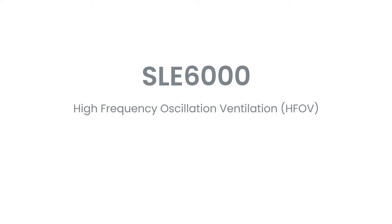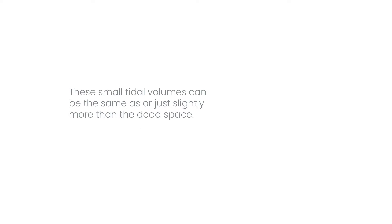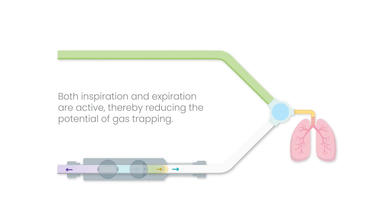High Frequency Oscillation Ventilation on the SLE6000. High Frequency Oscillation Ventilation can be simplistically defined as the delivery of small tidal volumes at very high rates and therefore is lung protective. These small tidal volumes can be the same as or just slightly more than the dead space. The rates are typically between 10 Hz and 15 Hz, or 600 to 900 breaths per minute. Both inspiration and expiration are active, thereby reducing the potential of gas trapping.